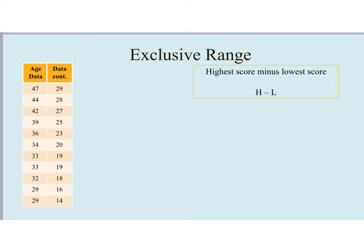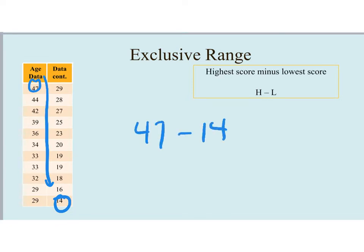The first measure of variability is the exclusive range, often just called the range — similar to how people say 'average' when referring to the mean. The exclusive range tells us to put the data in order from highest to lowest score and find the difference by subtracting. In this data set for age, the highest value is 47 and the lowest is 14. So we take 47 minus 14, giving us an exclusive range of 33.